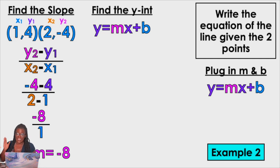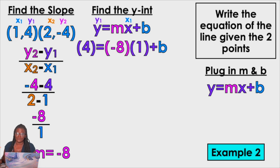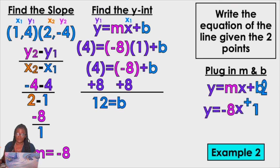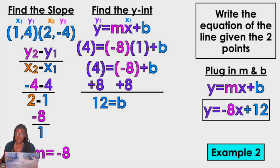Step number 2 is find the Y-intercept. We need to plug in Y1, M, and X1. Y1 is 4, M is negative 8, X1 is 1. So 4 equals negative 8 times 1 plus B. Multiply negative 8 times 1. Get rid of the negative 8 — add 8. 4 plus 8 is 12. Take B and M and put them in the equation: Y equals negative 8X plus 12.